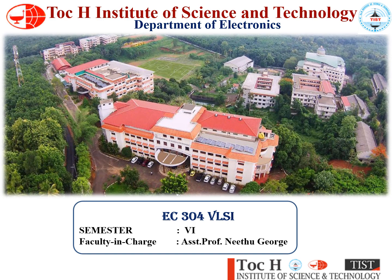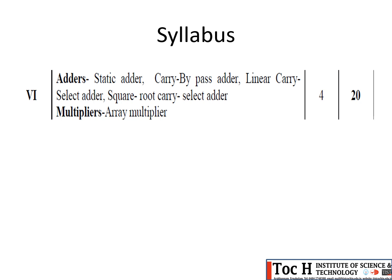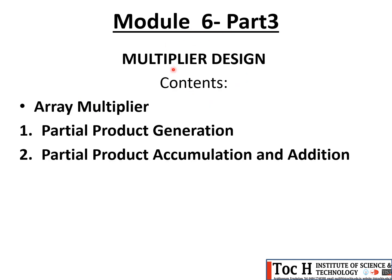Welcome to the ninth video lecture for EC 304 VLSI. In this lecture we will cover the last topic of module 6. In module 6 we have learned adder design — covering static carry, carry bypass, linear carry select, and square root carry select adders. In this video we will cover the final topic: the array multiplier, or hardware implementation of the multiplier.